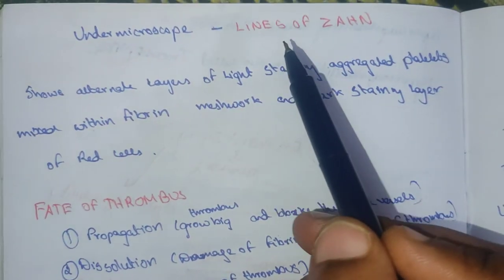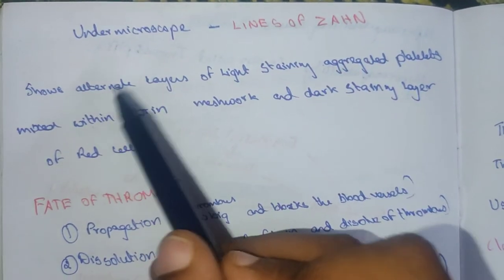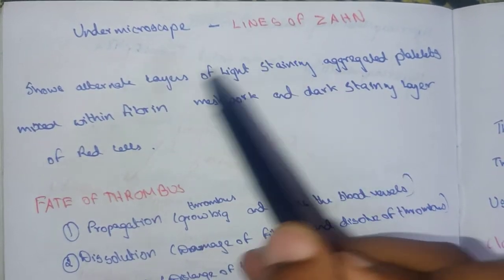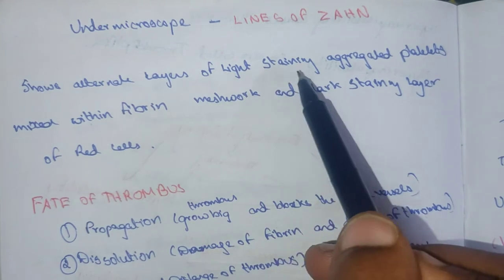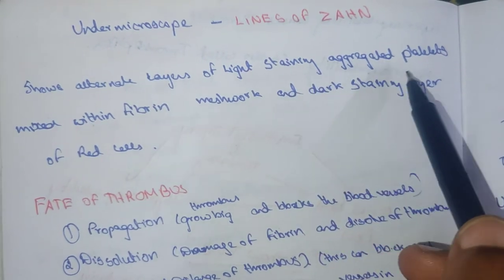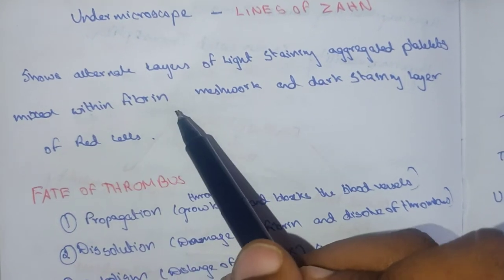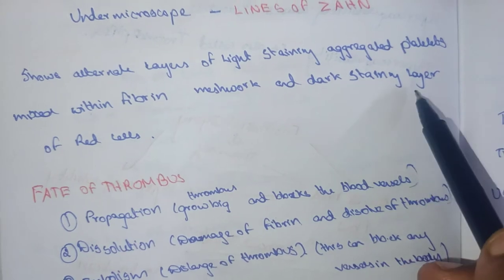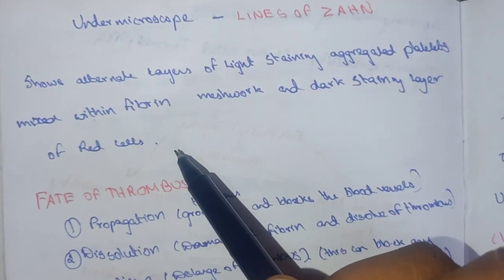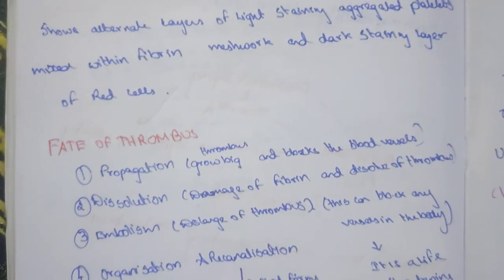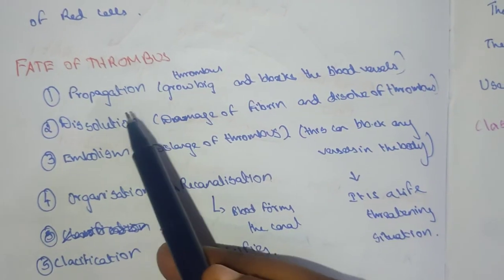Under an ultramicroscope, lines of Zahn are seen. These lines of Zahn show an alternating pattern of a light-staining layer of aggregated platelets mixed with a fibrin meshwork, and a dark-staining layer of red blood cells.